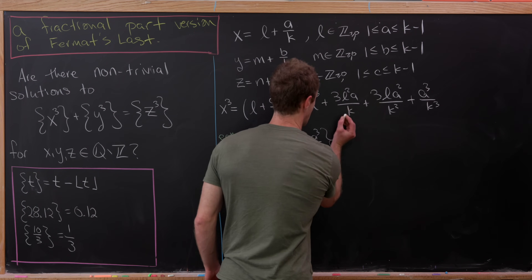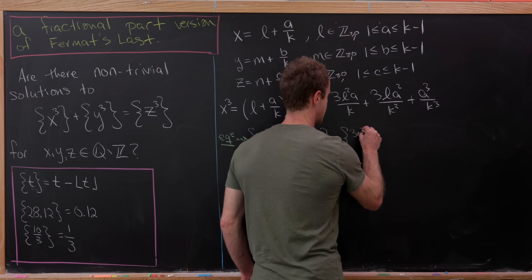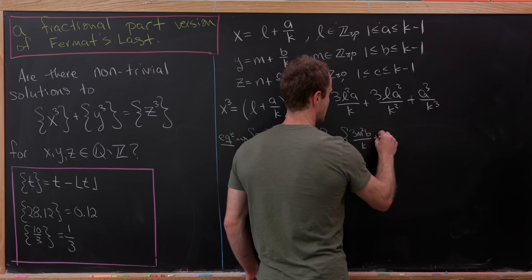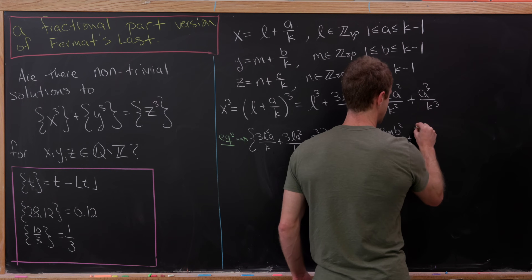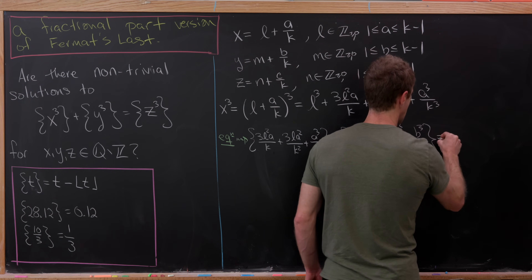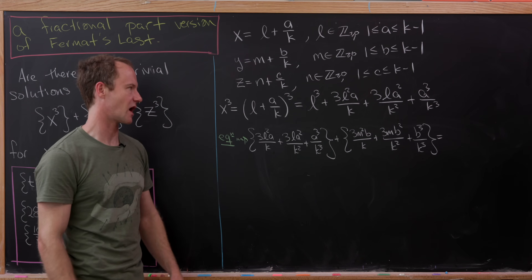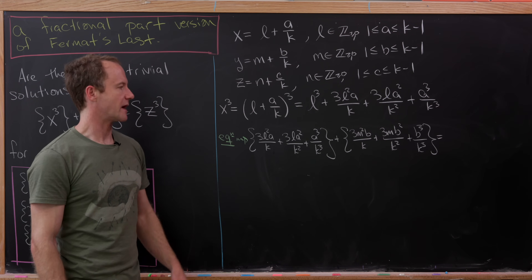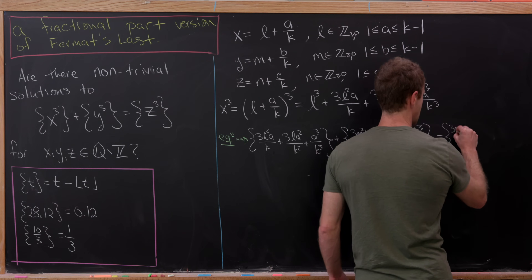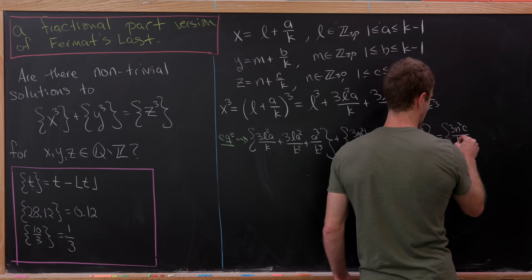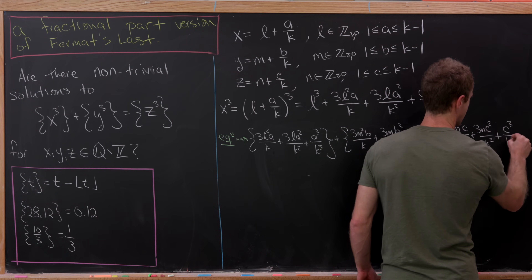The fractional part of y³ gives: 3m²b/k + 3mb²/k² + b³/k³. And the fractional part of z³ gives: 3n²c/k + 3nc²/k² + c³/k³. These all share a common denominator since we gave them a common denominator from the start.